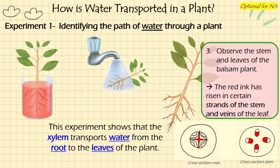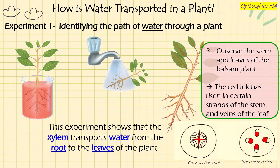You may have seen this experiment: if you soak the roots of a plant or flower into colored water, over time you will see that the rest of the plant - the flower or the leaves - will exhibit that color. This shows that xylem transports water from the roots to the leaves of the plant, absorbing and carrying the colored water upward.